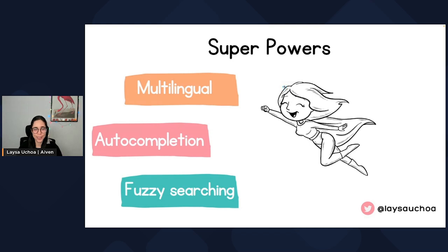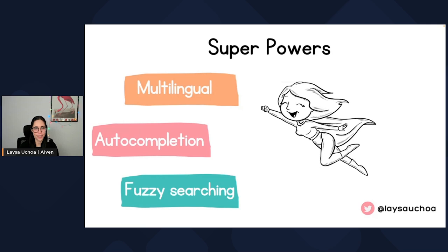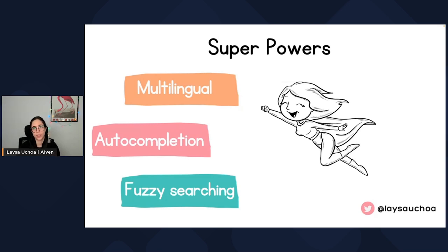If OpenSearch would be a hero, can OpenSearch understand my broken English? You may have noticed English is not my mother tongue. So I may type something with mistakes, but who doesn't, right? So if OpenSearch would be a hero, OpenSearch would be able to understand broken English, because OpenSearch has support for fuzzy searching. Fuzzy searching basically means that maybe you mistyped some word and you still want to get the relevant results. OpenSearch does have support for that.